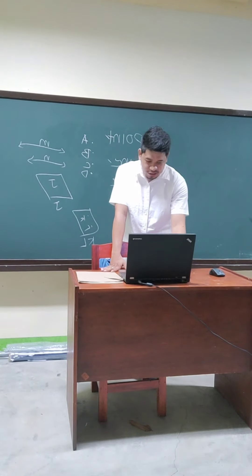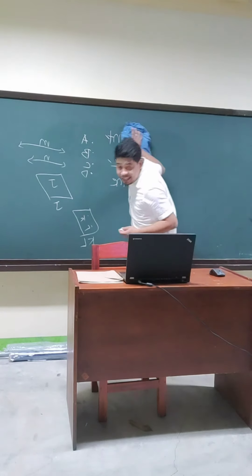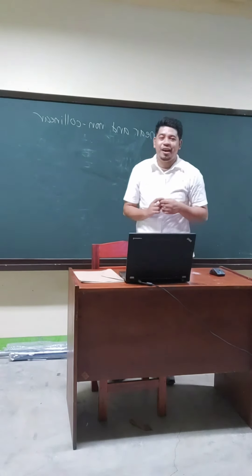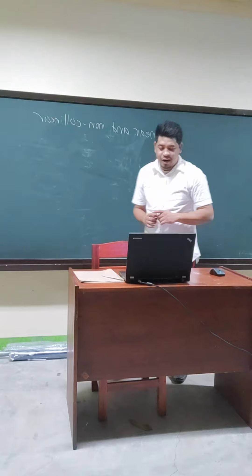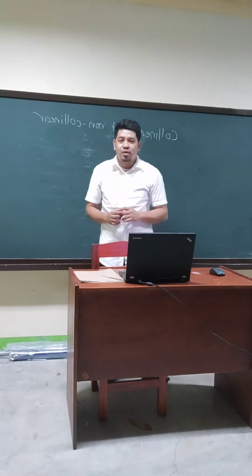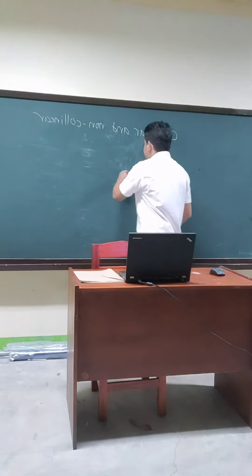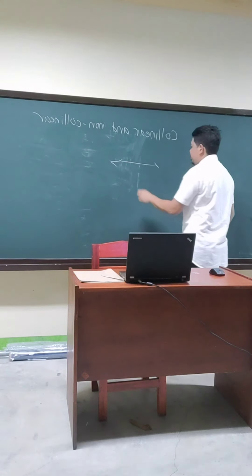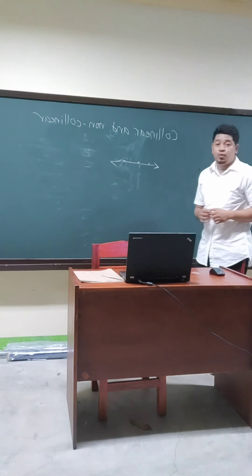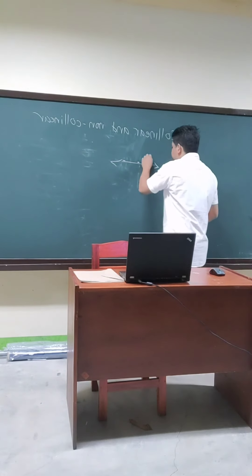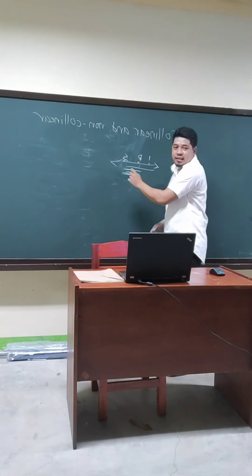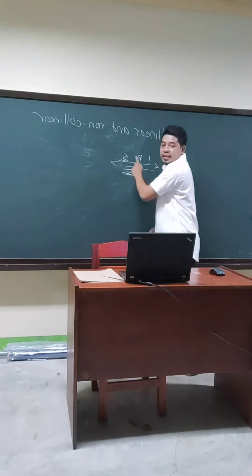So next I will discuss collinear and non-collinear points. Collinear points are points that lie on the same line. For example, if you see a line and there are points here, here, and there, that is what we call collinear — because points I, R, and S lie on the same line. All three points are on the same line.